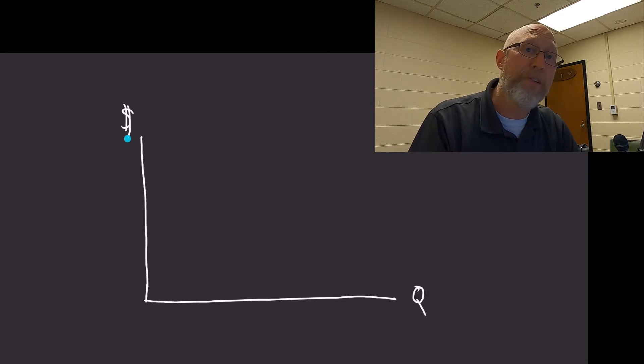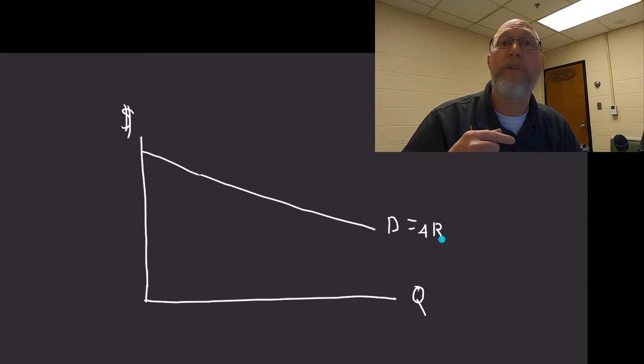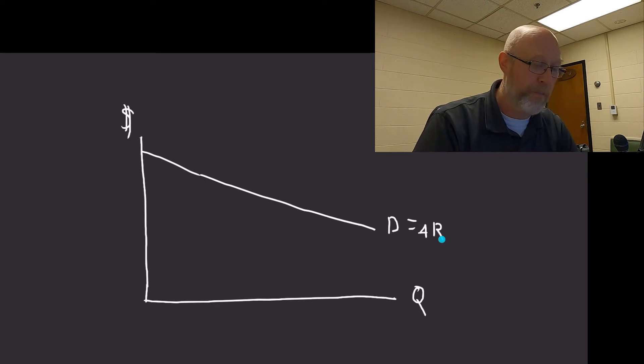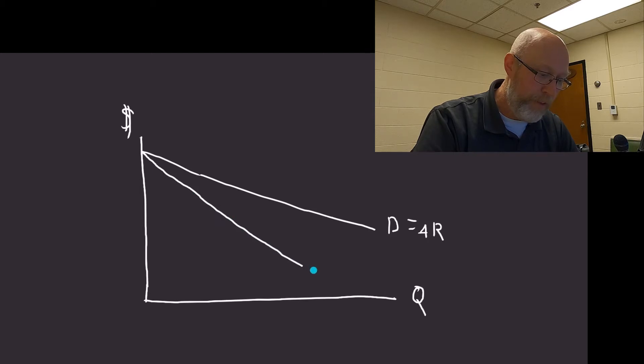We're going to approach this from a standpoint of a co-op that's trying to look at the market. So there's always going to be a demand curve, which is equal to the average revenue curve and the price for our marketing cooperative. And if there's a demand curve, there's going to be a marginal revenue curve, and there is going to be a cost curve.